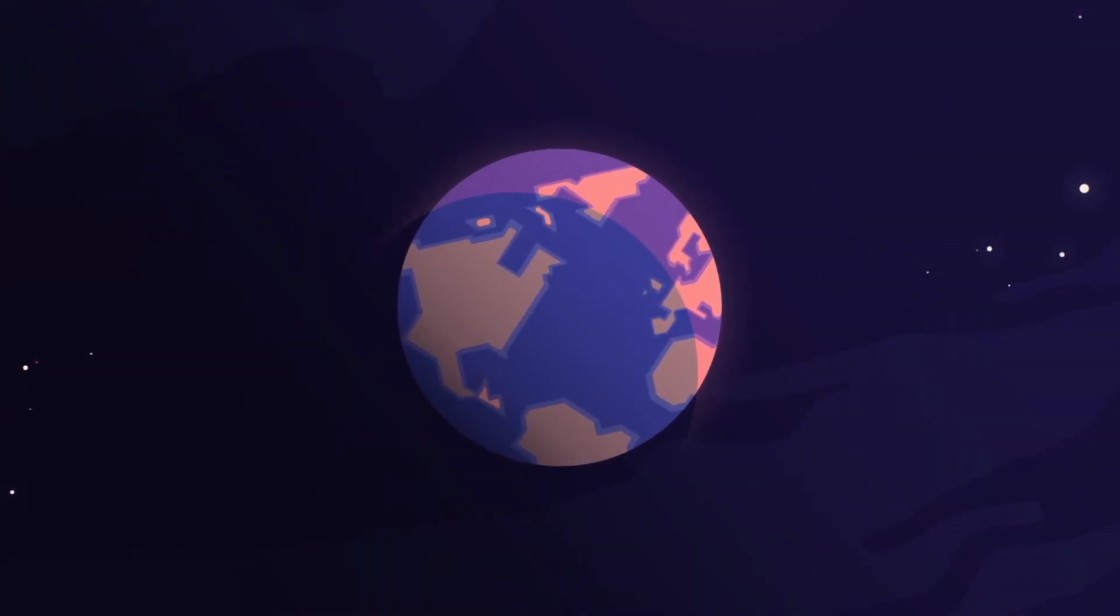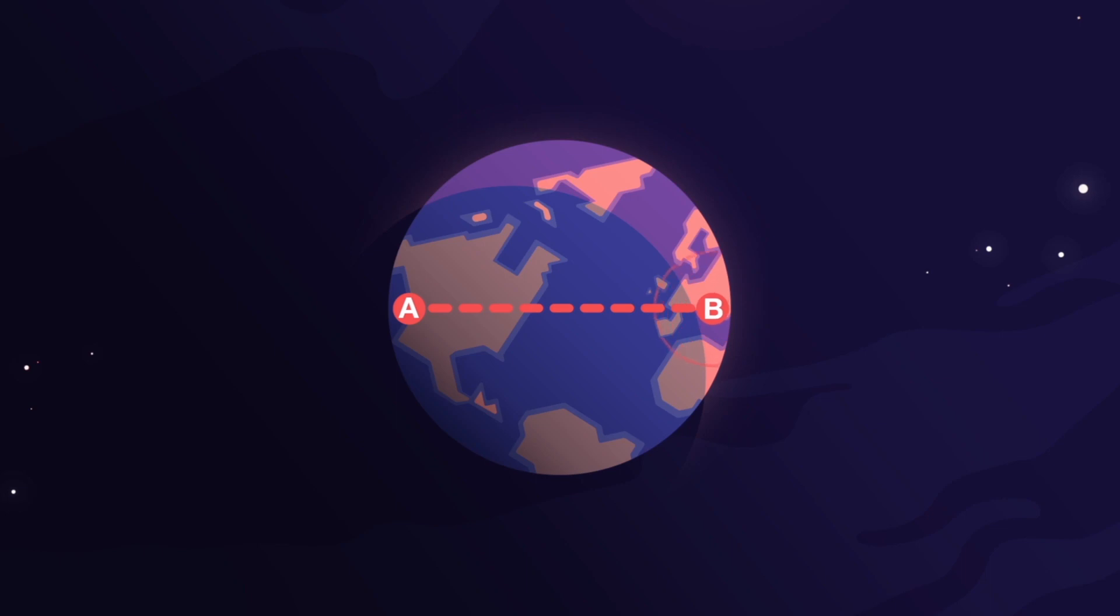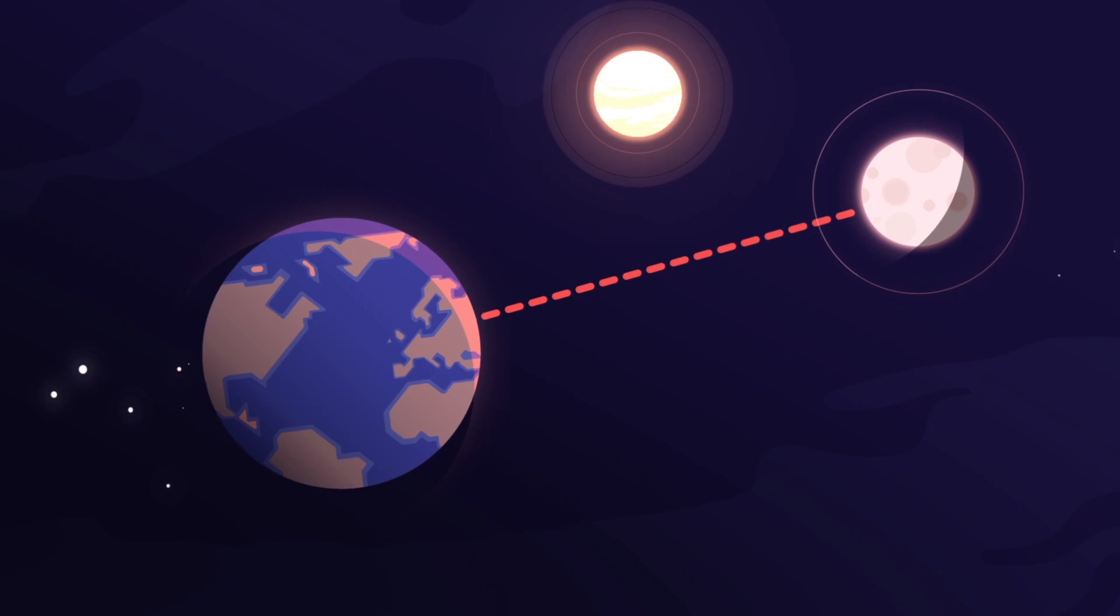If we fly somewhere on Earth, we fly directly from A to B. So you'd think that if you fly from Earth to the Moon, you'd simply fly directly too, right?